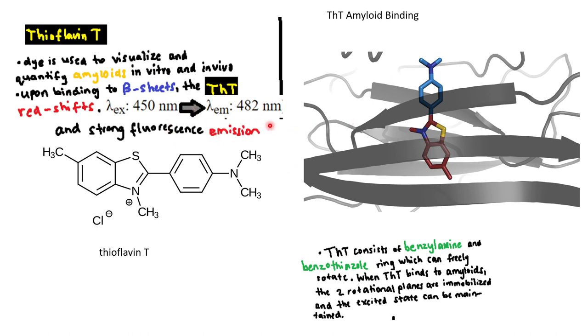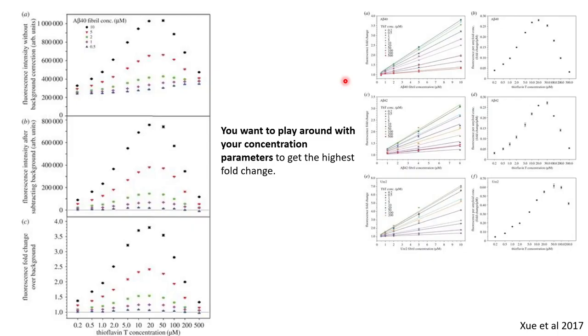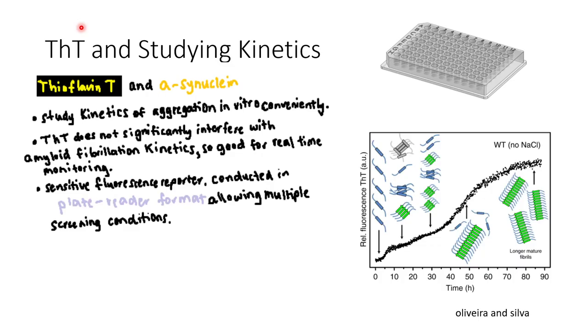So you can use ThT to study the kinetics of amyloid formation. I personally like alpha-synuclein and Parkinson's disease, so I'm interested in thioflavin T in the context of Parkinson's disease, but you can also use it for Alzheimer's disease if you're interested in A-beta.